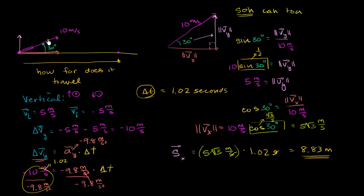In the last video where we launched something at an angle, we figured out the horizontal and vertical components of that launch velocity. We used the vertical component to figure out how long that thing is in the air, and then used that time to figure out how far it'll travel given a constant horizontal velocity. What I want to do in this video is redo part of that problem — specifically to figure out how long this object stays in the air — but in a slightly more complicated yet more powerful way.